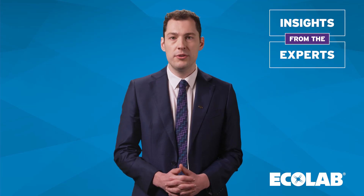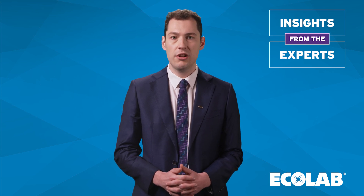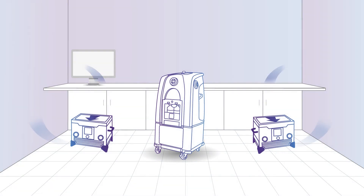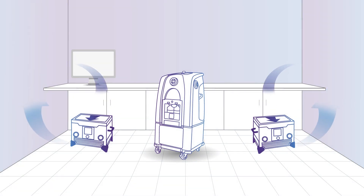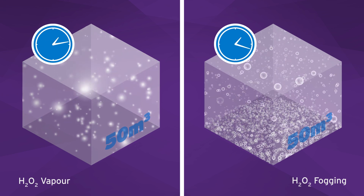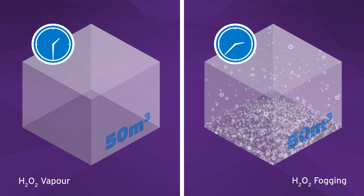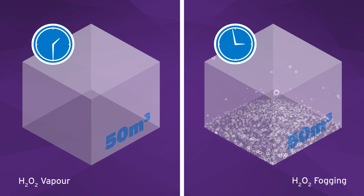When it comes to how long the process takes, fogging systems typically rely on passive decomposition of hydrogen peroxide, leading to longer cycle times, whereas vapour systems utilise catalytic aeration devices, which makes the process much quicker. For example, the total cycle time for a 50 metre cubed room is around one and a half hours for vapour decontamination and two to three hours for fogging systems.